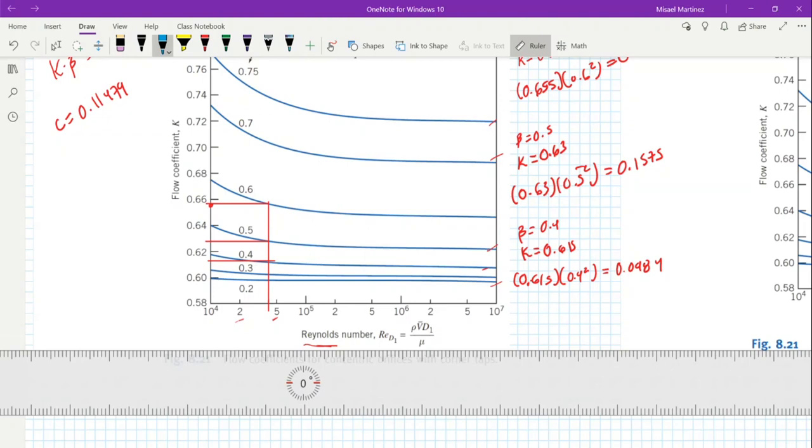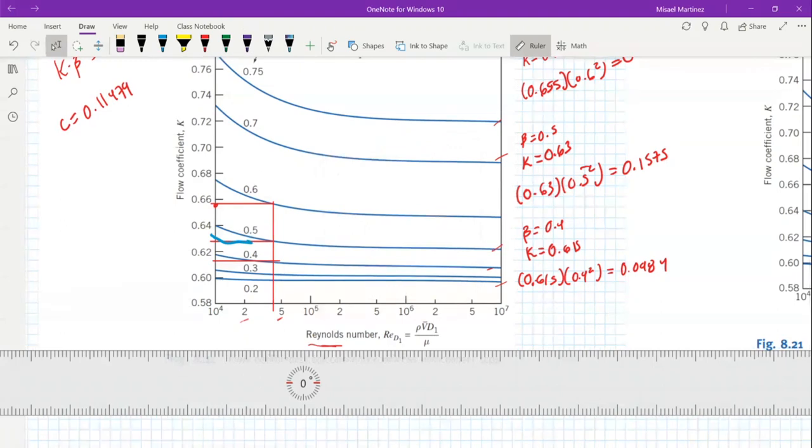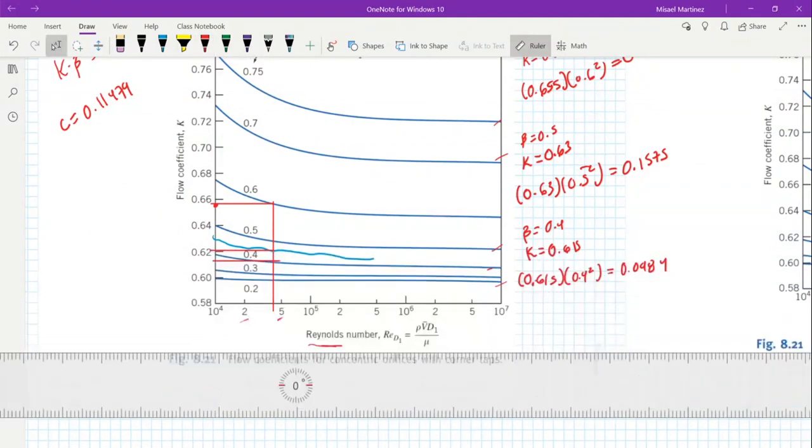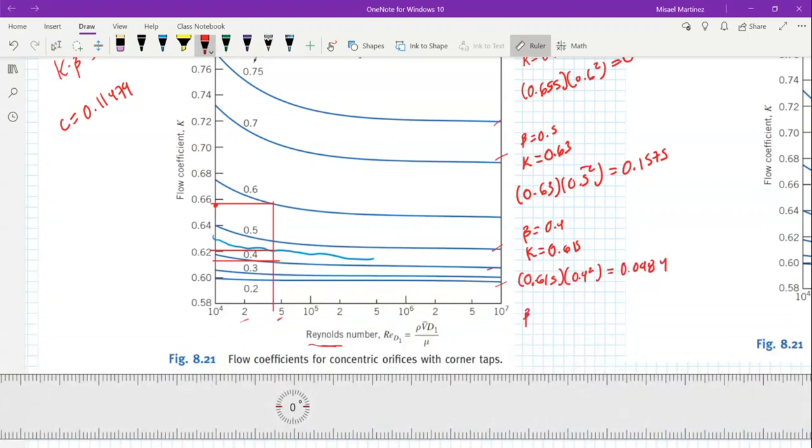We can say that our beta values fall somewhere between 0.4 and 0.5. All we have to do now is keep guessing and try to interpolate. Let's imagine there was another beta between the 0.4 and the 0.5. If we were to work there, what value would we get? Let's say we are 0.45 beta and our corresponding K, let's say we are about 0.62.